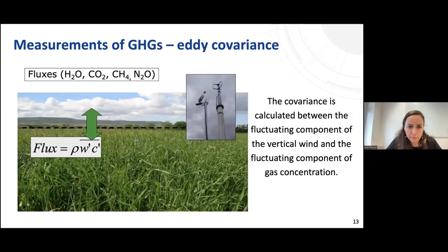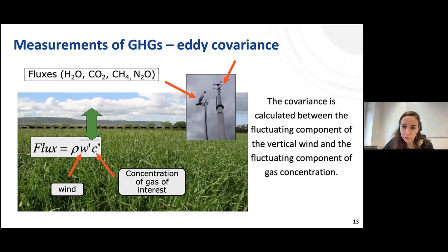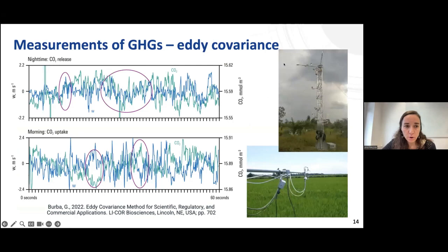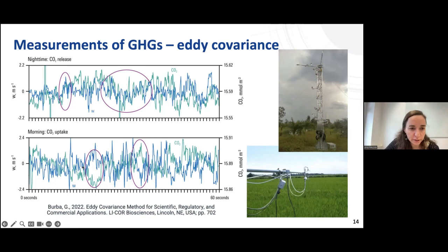To implement eddy covariance, we put a tower on top of the ecosystem and install a sonic anemometer that measures all three wind components at 20 Hz — 20 times per second — and also measure the concentration of the gas of interest. The instrument shown here is for CO2 and water, but other instruments can be used for other gases when available. We then calculate the covariance between the vertical wind speed and the gas concentration. If they are positively correlated, there is a positive flux — release from ecosystem to atmosphere. If negatively correlated, this indicates uptake from atmosphere to ecosystem.